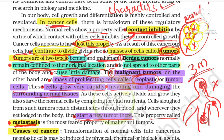So the difference: benign tumor cells remain confined to the original location; malignant tumor cells do not remain confined. Benign tumors do not spread to other parts; malignant tumors grow rapidly and invade other parts of the body. Benign tumors cause little damage; malignant tumors damage surrounding normal tissue by starting new tumors. Benign tumor — no metastasis; malignant tumor — there is the metastasis property.